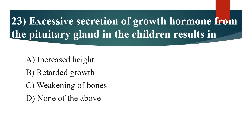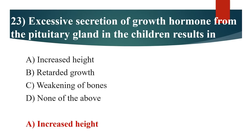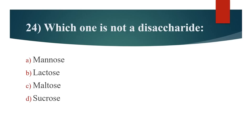23rd question: Excessive secretion of growth hormone from the pituitary gland in children results in? Option A: Increased height. Option B: Retarded growth. Option C: Weakening of bones. Option D: None of the above. Answer is Option A: Increased height.